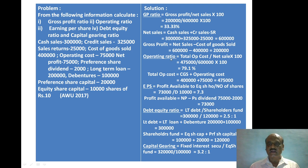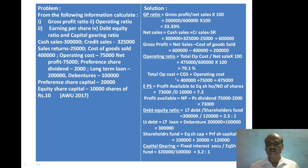Next, operating ratio formula: total operating cost divided by net sales into 100. Total operating cost = cost of goods sold Rs. 4 lakh + operating cost Rs. 75,000 = Rs. 4,75,000. Applying the formula: Rs. 4,75,000 divided by Rs. 6,00,000 into 100 = 79.1% is the operating ratio.